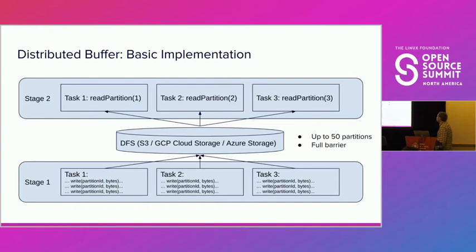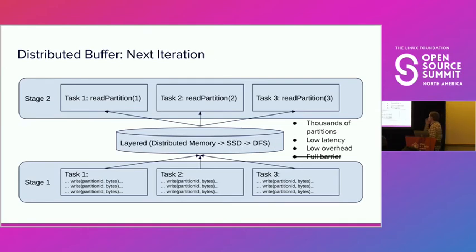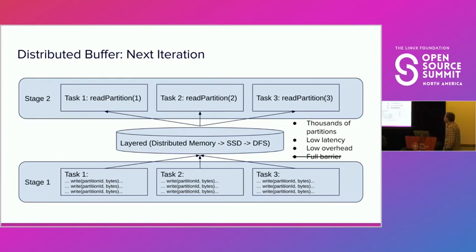Further down the road, we are building the next-generation distributed buffer. It will be a layered implementation utilizing distributed memory, then SSDs, and only then falling back to a distributed file system. This implementation will support thousands of partitions, support low-latency use cases, significantly reduce overhead since we'll use distributed memory and SSDs as much as possible, and we are also planning to remove the full barrier limitation with this newer implementation.